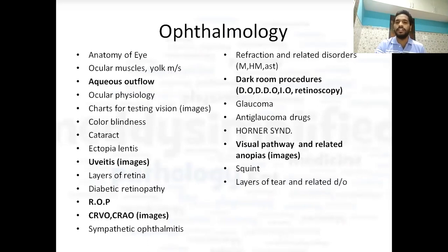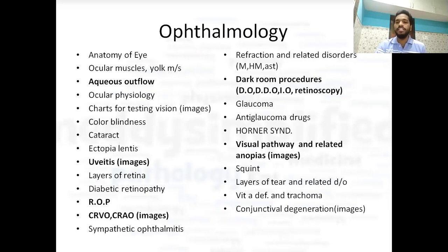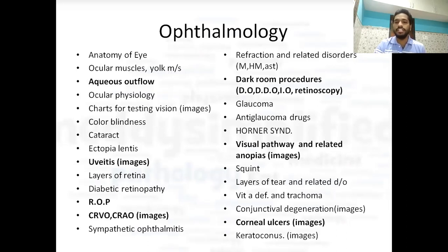Strabismus is very important. Layers of the tear film and related disorders — the tear film has three layers and if there is deficiency in any layer that is a related disorder which is very important to know. Then vitamin deficiency, xerophthalmia and other stages, and trachoma are very important. Then macular degeneration and their images are very important. Then corneal ulcer is once again a very important topic — four types of corneal ulcer and their images, signs, and the kind of hypopyon seen in keratoconus — images have been asked from this topic.